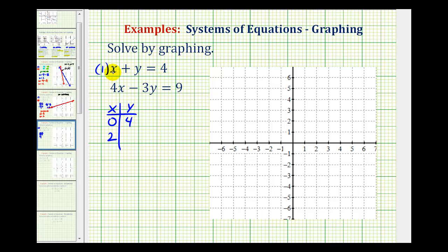If x is two, y would have to be two, because two plus two is also four. Let's plot these two points. Here's the point zero, four. Here's the point two, two. Let's graph the first line.